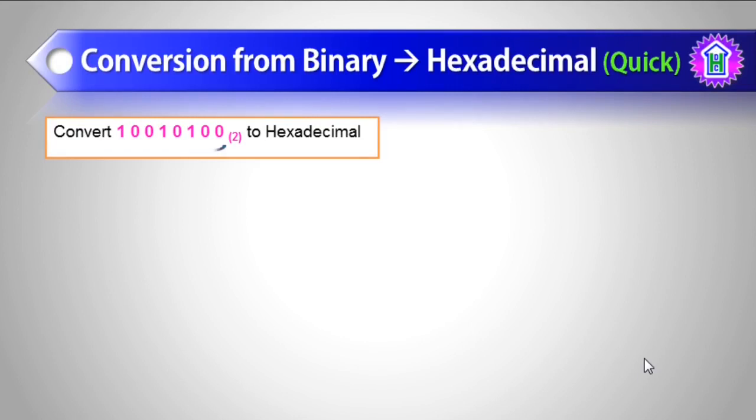Now this could be split into two groups of four binary digits.